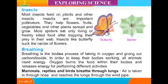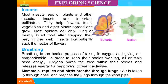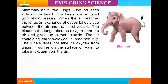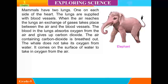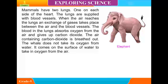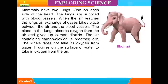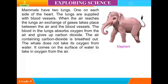Mammals, reptiles, and birds breathe through lungs. Air is taken through the nose and reaches the lungs through the windpipe. Mammals have two lungs, one on each side of the heart. The lungs are supplied with blood vessels. When air reaches the lungs, an exchange of gases takes place: blood absorbs oxygen from the air and gives up carbon dioxide, which is then breathed out.